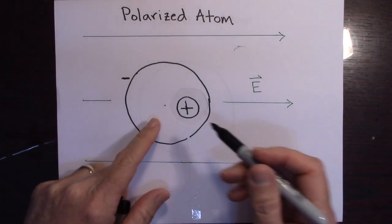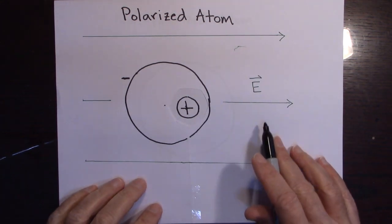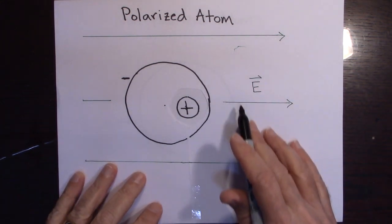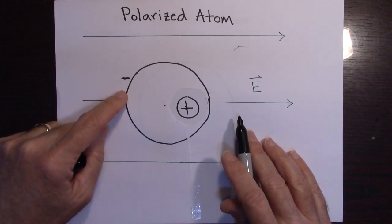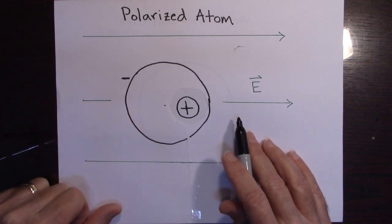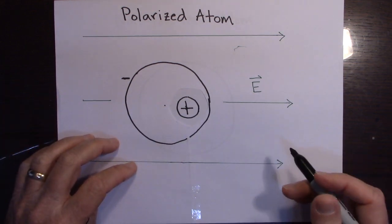So we say this atom is polarized. But can you imagine if we put a strong enough electric field in here, like a really strong field, there would be a point where these valence electrons would just get ripped off of the atom. And it would fly over to the other plate and it would discharge the other plate.